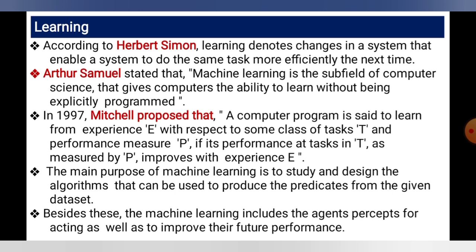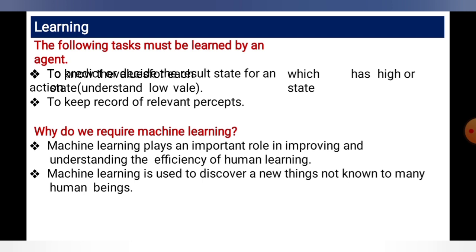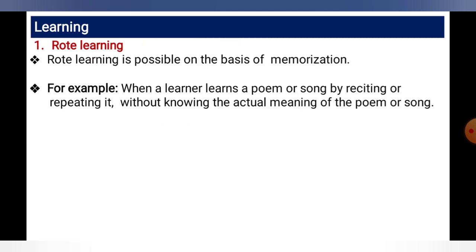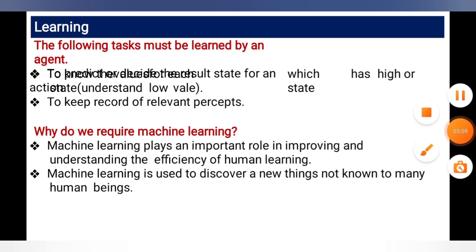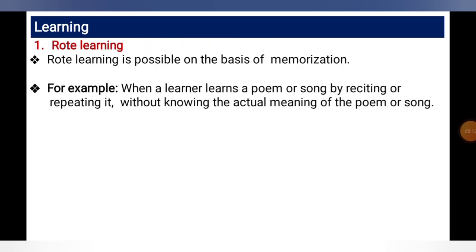The main purpose of machine learning is to study and design algorithms that can be used to produce predictions from given data sets. The following tasks must be learned through learning agents by keeping records from relevant aspects. Machine learning plays an important role in improving and understanding the efficiency of human learning, and is used to discover new things not known to many human beings.